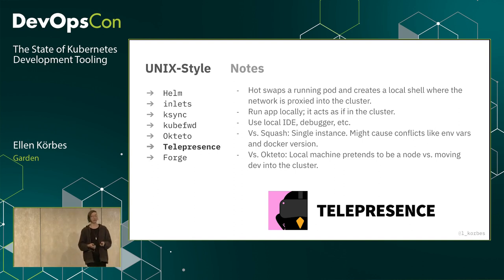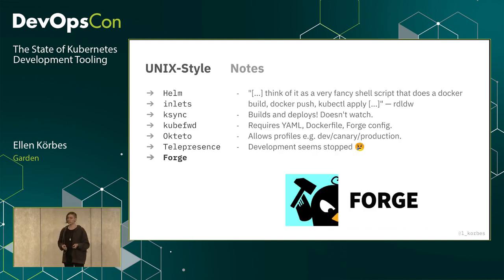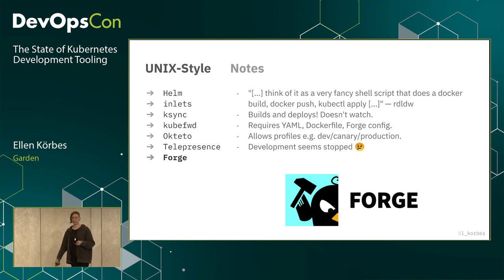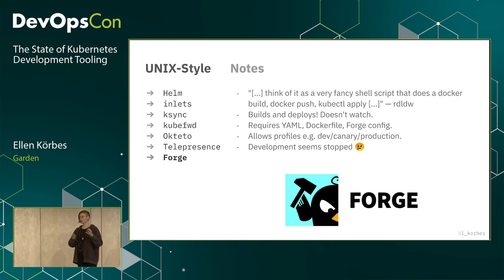Now I'm going to talk about two tools that are dead — not under development — but they set the history for the next category that I'm most excited about. Forge is dead and not under development. It came out some time ago as a predecessor to a bunch of tools that exist now. You can think of it as a very fancy shell script that does docker build, docker push, kubectl apply. It was great because you shouldn't have to do those things by hand. But that's all it did. It didn't watch your files for changes, didn't track dependencies, didn't do tests.